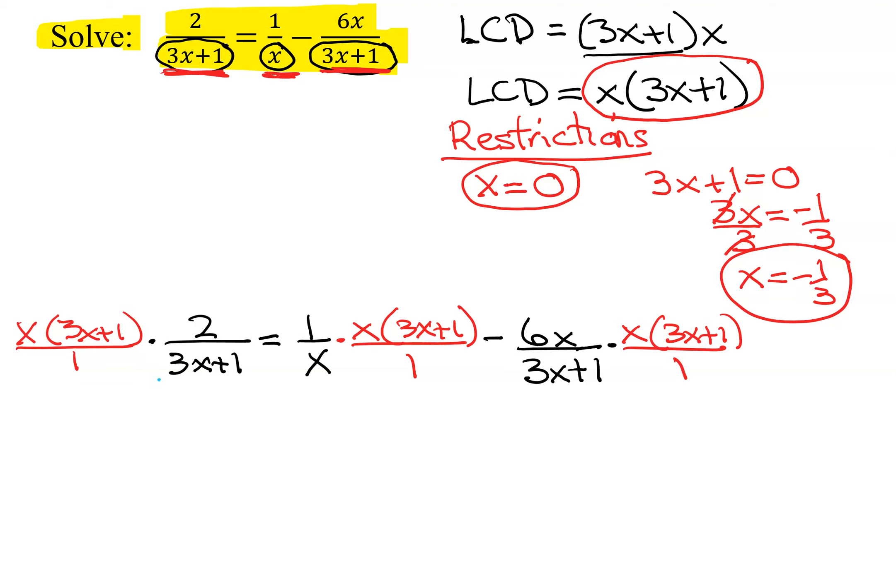We're looking at our first term. The 3x plus 1 reduces, and I get left with x times 2. So that's 2x.